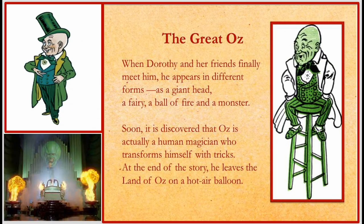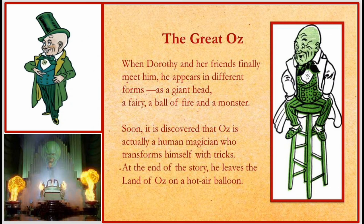The Great Oz is a very important character — the name of the story itself is The Great Wizard of Oz. When Dorothy and her friends finally meet him, he appears in different forms: as a giant head, a fairy, a ball of fire, and a monster — a different form to each person. He never shows his real face to anybody. It is eventually discovered that Oz is actually a human magician who transforms himself with tricks and has no real magical power. At the end of the story, he leaves the land of Oz on a hot air balloon.